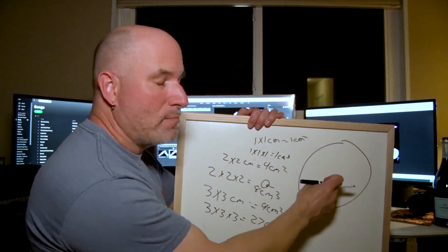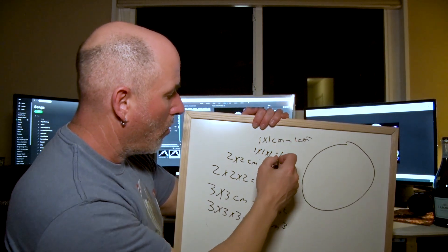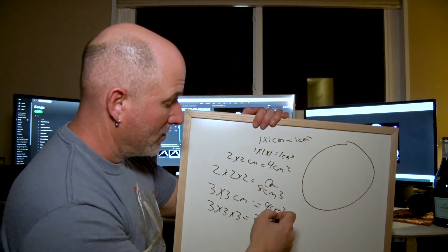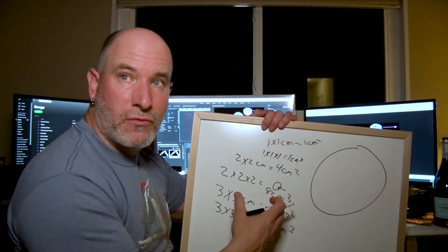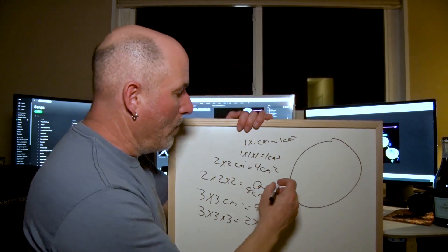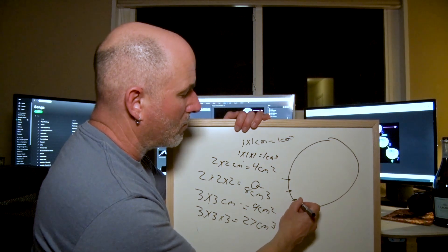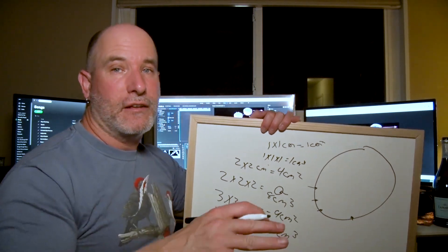So as you can see as you grow in size your volume grows at the third power and your surface area grows at the second power. So you can see 1, 4, 8; 1, 9, 27. The volume, you gain a lot more volume much more quickly than surface area. And people would say that limits the cell size because of diffusion across the membrane. That is very wrong.